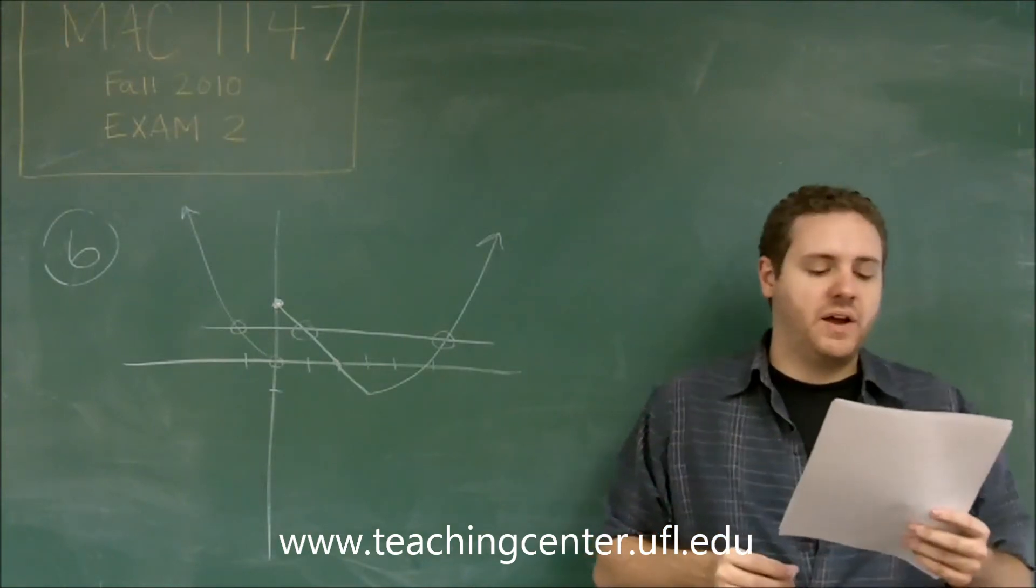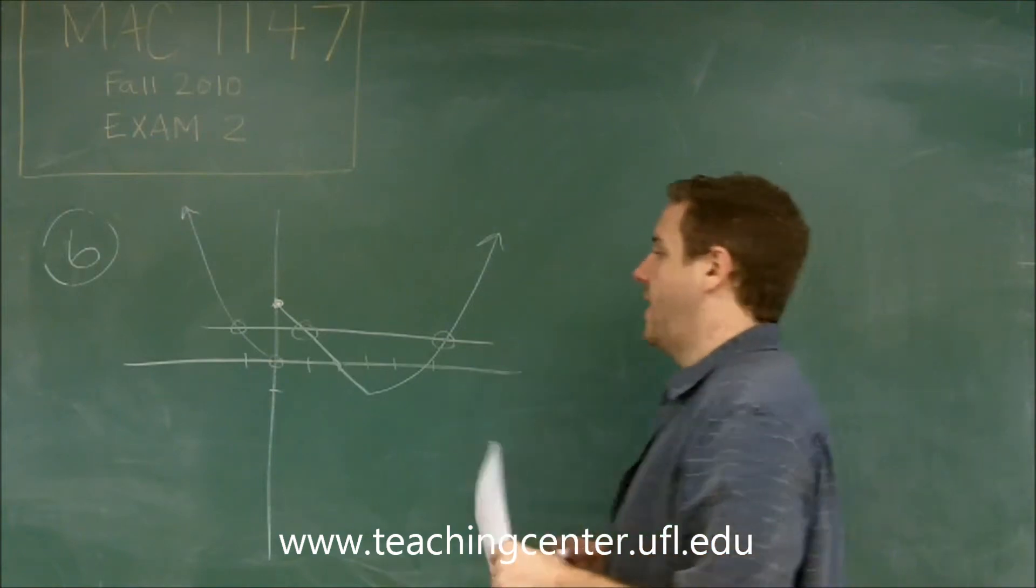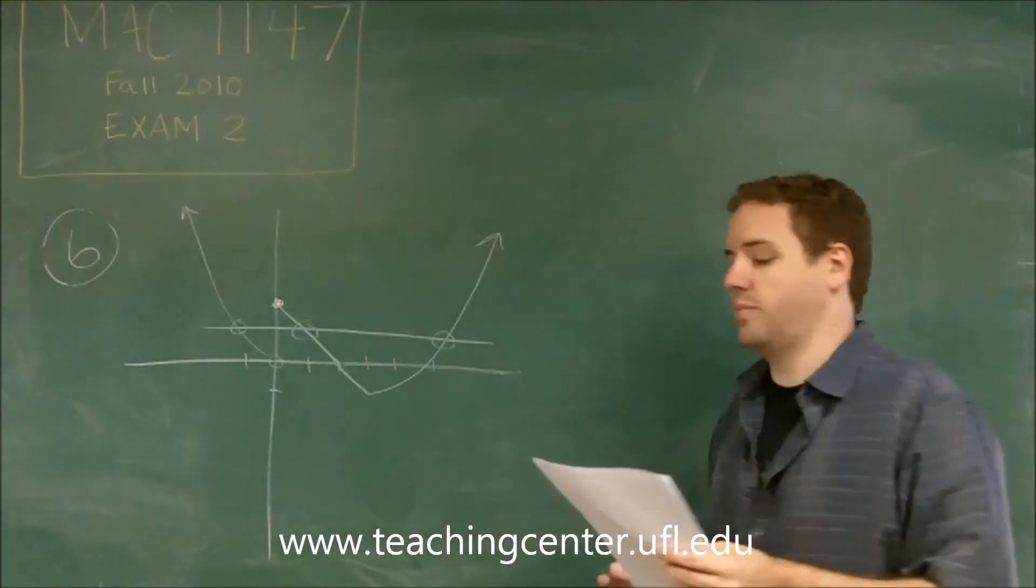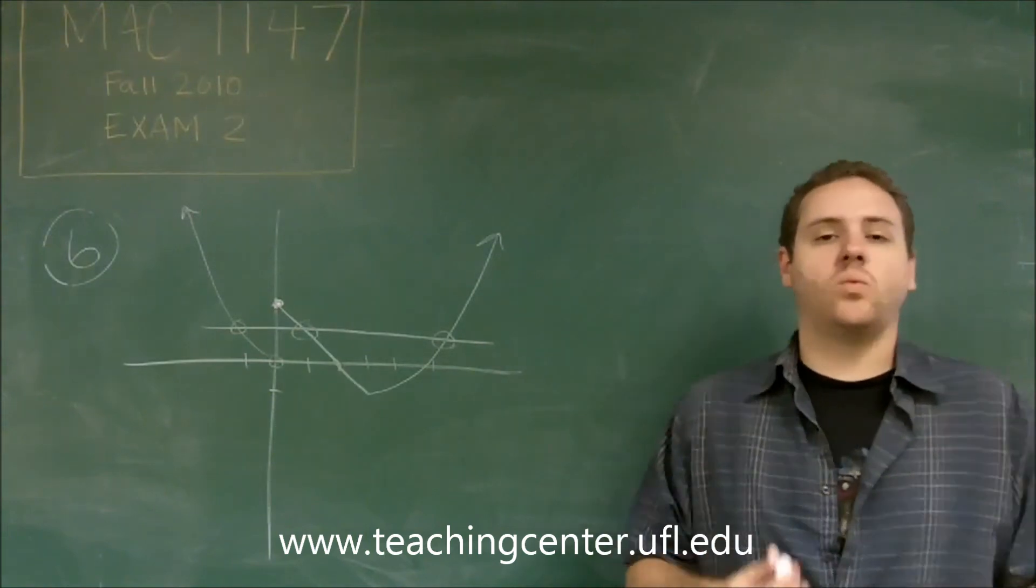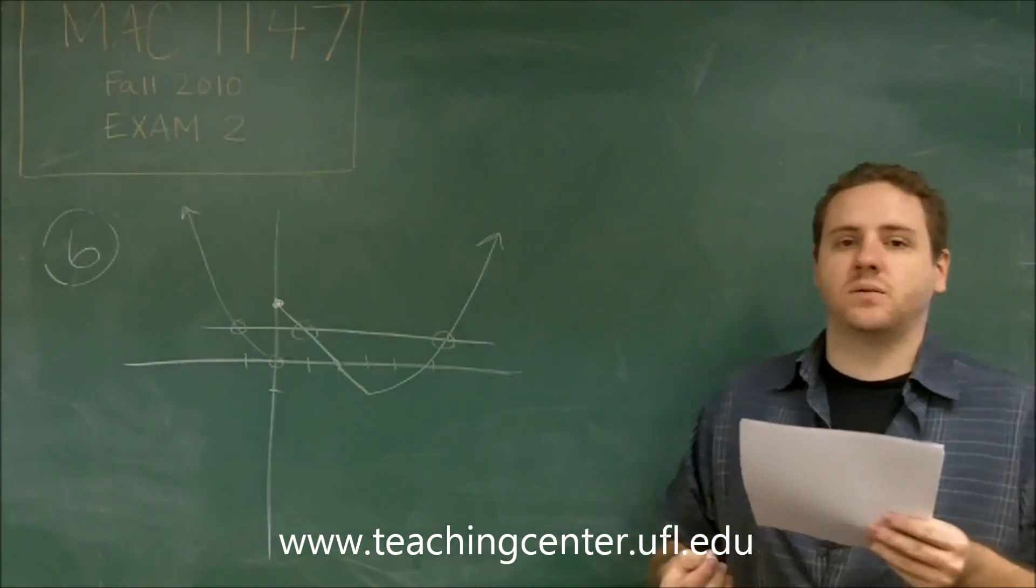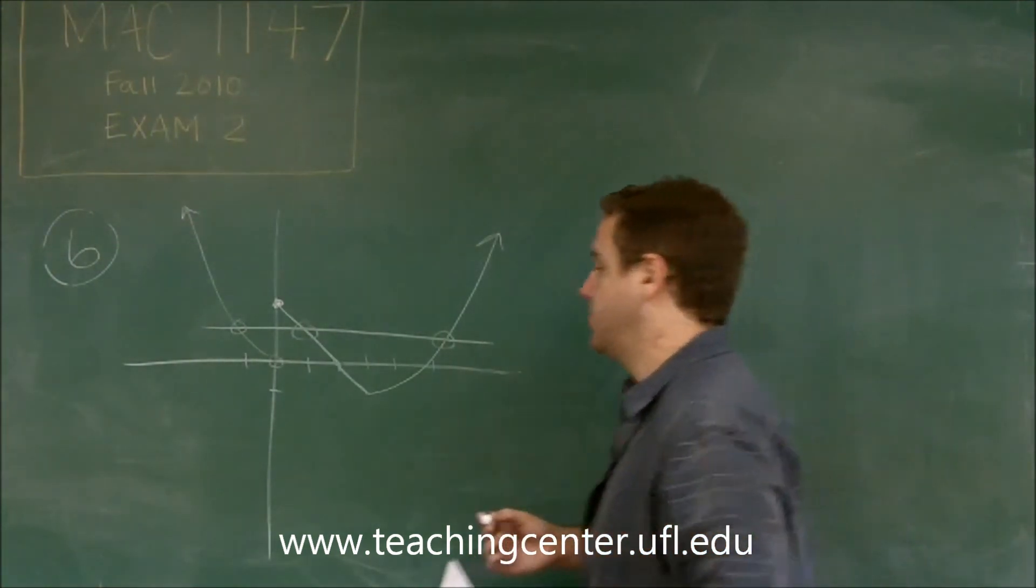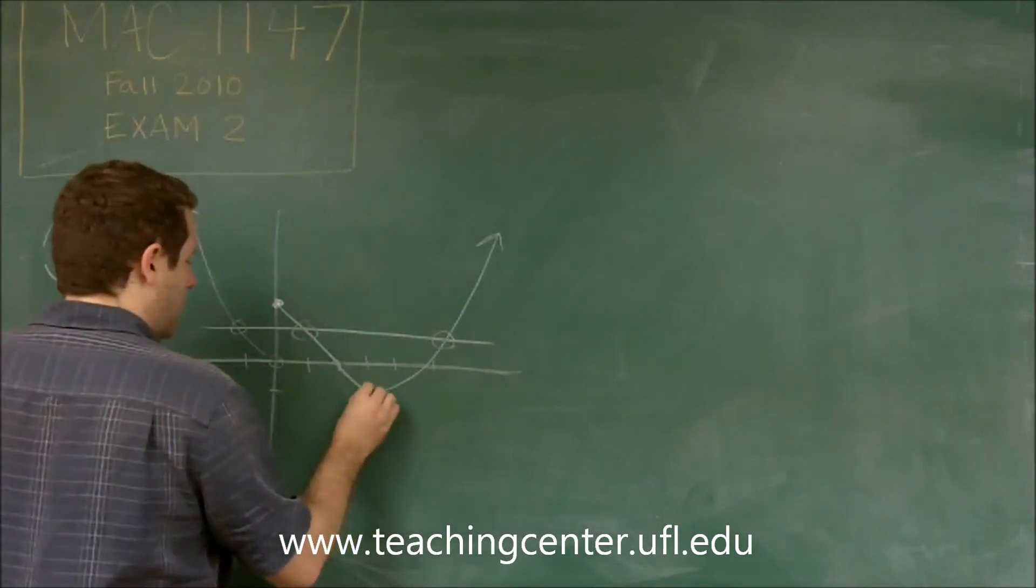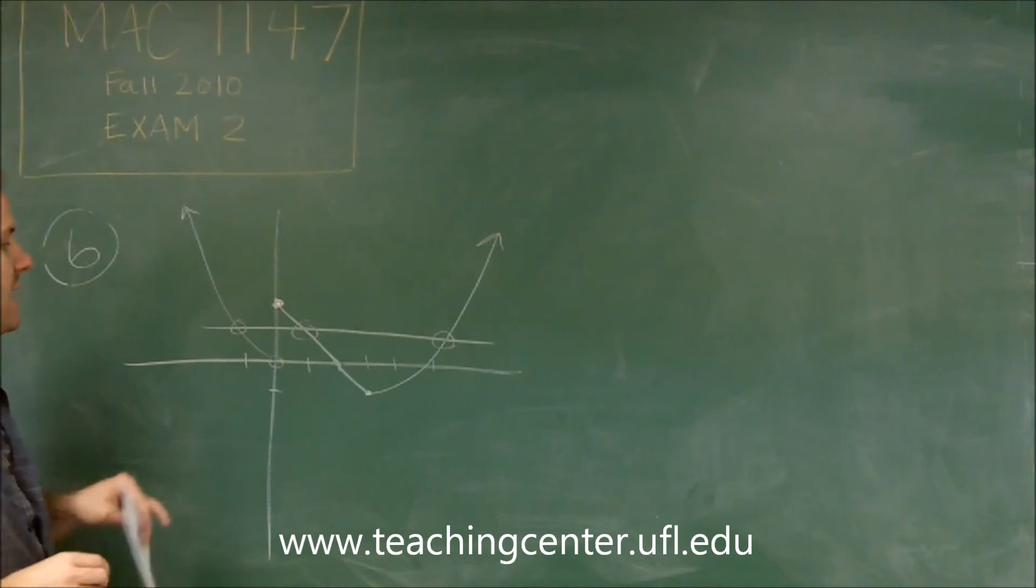f has the local minimum value negative one. So that here is true because when they say the minimum value, what you're talking about is the y value. Another way of reading that choice is the lowest y value on this graph is negative one. That is absolutely true because this point right here is the absolute lowest point on the graph and it has a y value of negative one. So that is true.